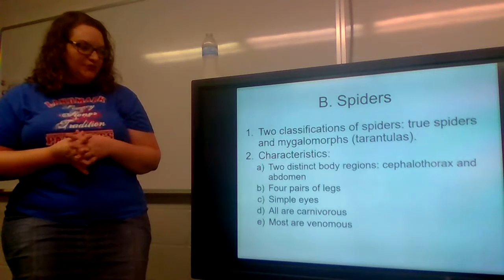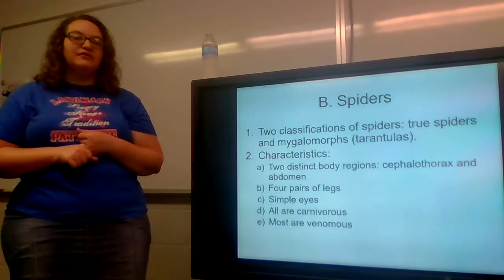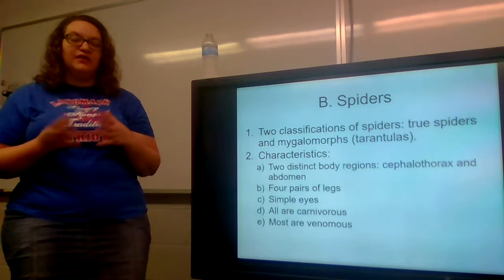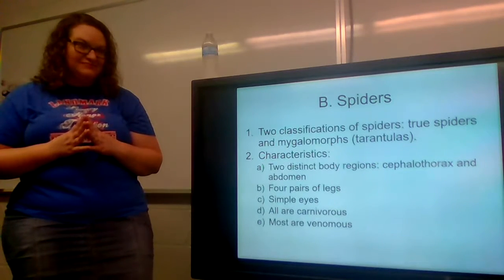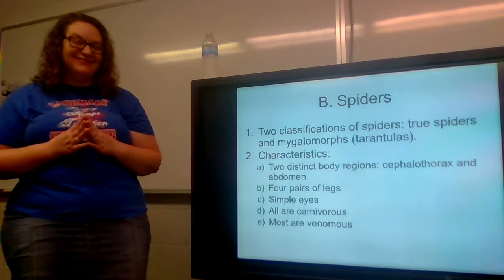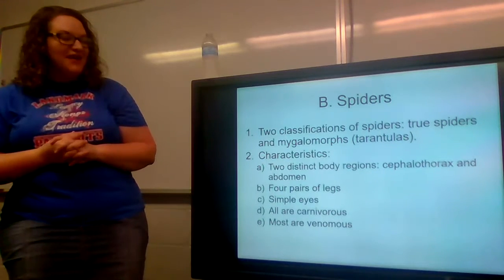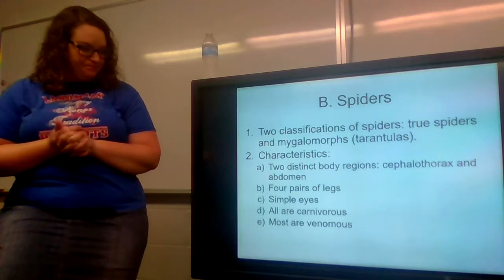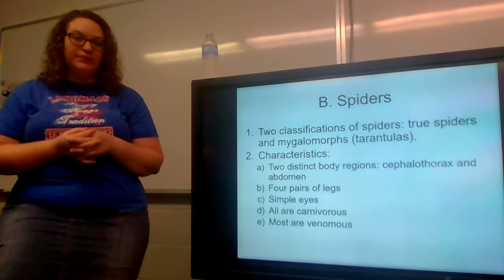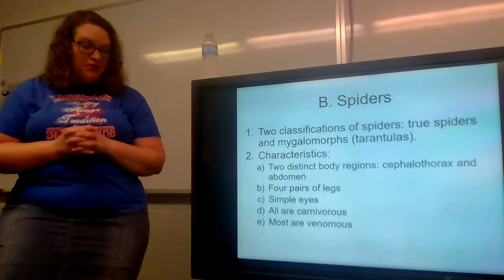Some characteristics of spiders in general: they have two distinct body regions, the cephalothorax and the abdomen. On a spider, the head and the thorax have been fused together into the cephalothorax. They have four pairs of legs — eight legs in total. They have simple eyes, and all are carnivorous and most are venomous. There are very few that are not venomous. Most of the time we don't even notice the venom because it's not strong enough to affect us, but it is powerful enough to affect whatever they're eating.